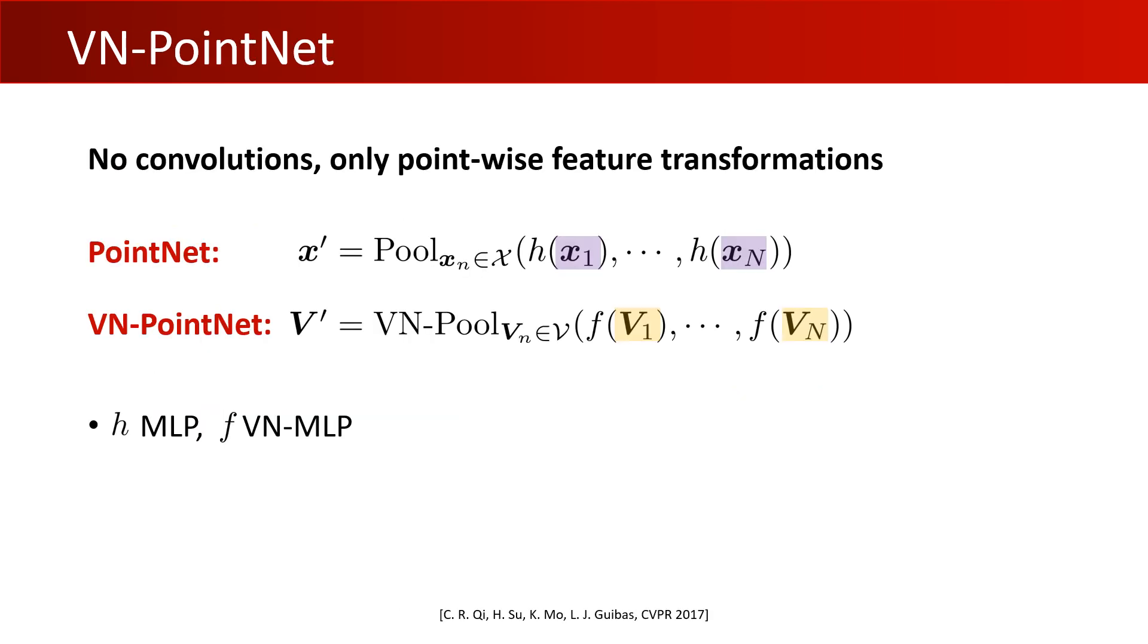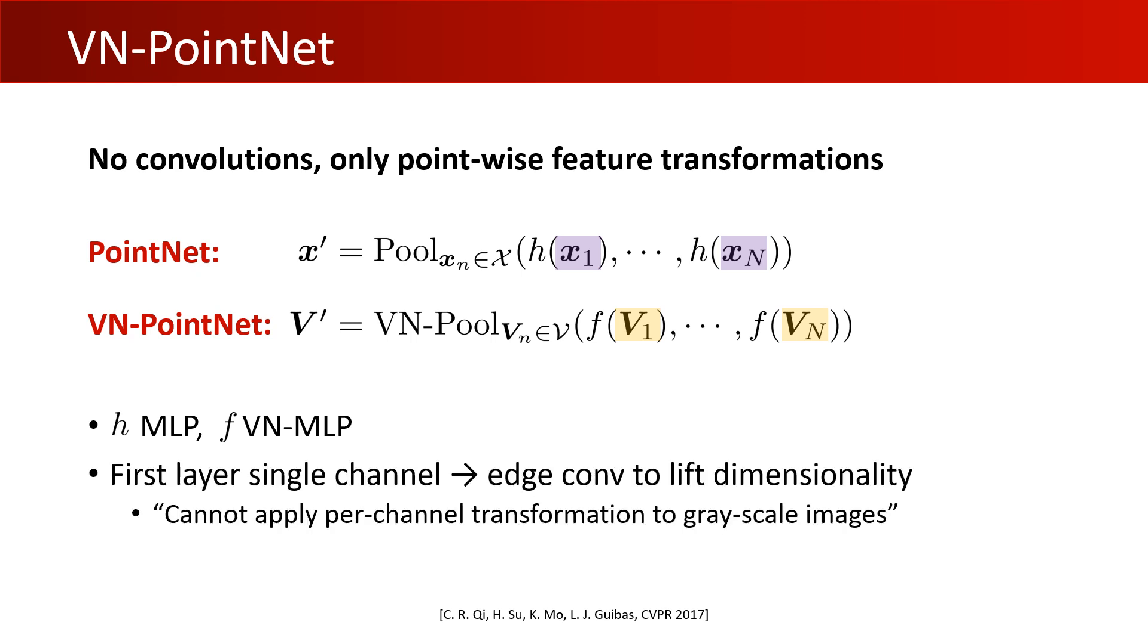PointNet is free from convolutions. Together with DGCNN, these two backbones are representatives of the richness of point cloud networks. Again, it can be rewritten into a VN network easily. One issue here is in the first input layer. When the inputs are 1 by 3 point coordinates, applying VN linear directly can result in all output features being linearly dependent. To tackle this, we add an edge convolution at the input layer to lift the features to higher dimensions.